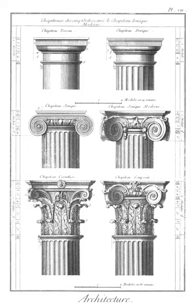Coffer: in architecture, is a sunken panel in the shape of a square, rectangle, or octagon that serves as a decorative device, usually in a ceiling or vault. Also called caisson or lacunar.